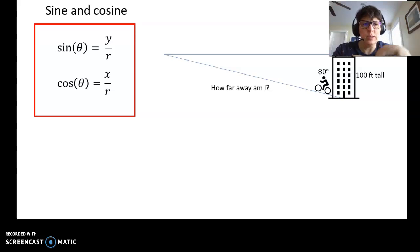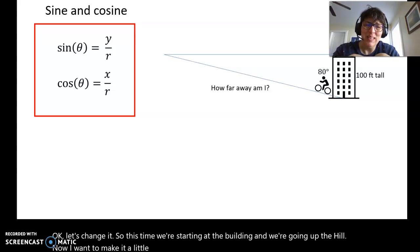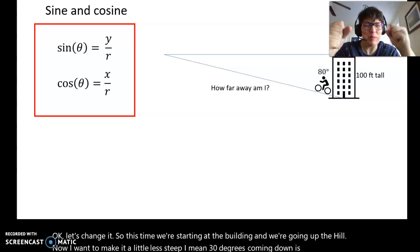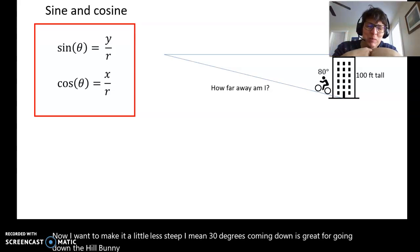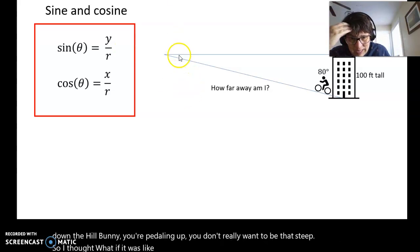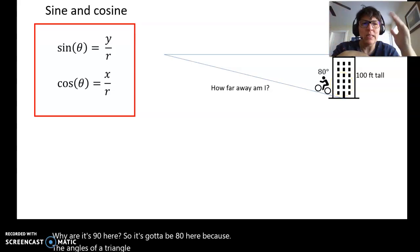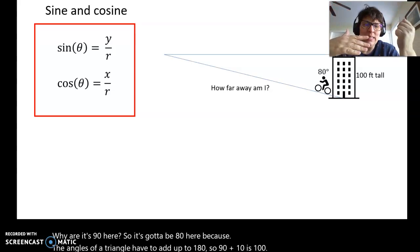Let's change it. So this time we're starting at the building and we're going up the hill. Now I wanted to make it a little less steep. I mean 30 degrees coming down is great for going down the hill, but when you're pedaling up, you don't really want it to be that steep. So I thought, what if it was like 10 percent right here? Well, I already know it's 90 here. So it's got to be 80 here because the angles of a triangle have to add up to 180.